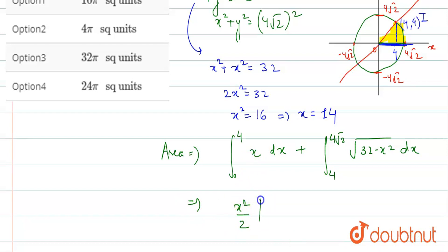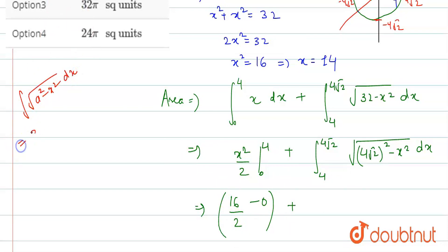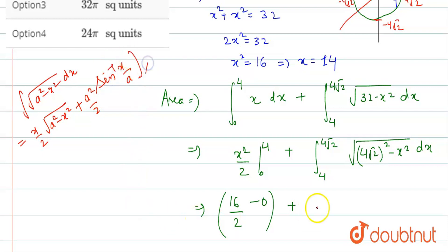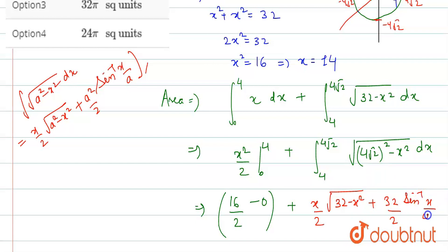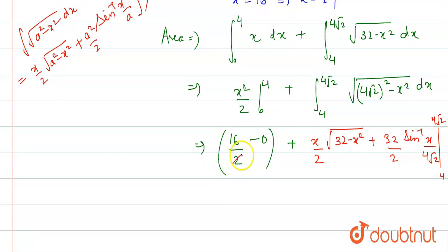Integrating: x²/2 evaluated from 0 to 4, plus the integral of √(32 − x²) from 4 to 4√2. For the second integral, we use the standard formula ∫√(a² − x²) dx = (x/2)√(a² − x²) + (a²/2) sin⁻¹(x/a), where a² = 32 (a = 4√2). Evaluating from 0 to 4 gives 16/2 − 0 = 8.